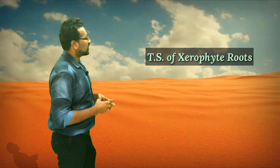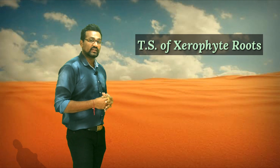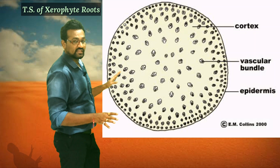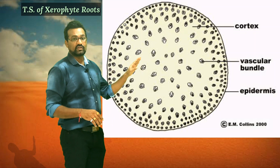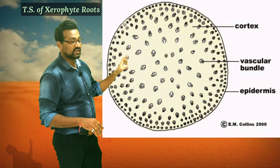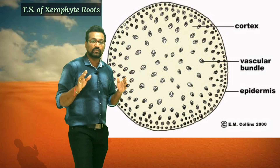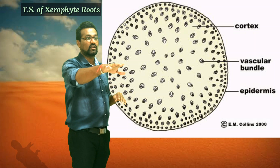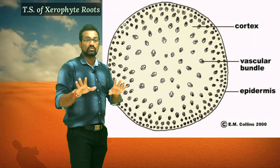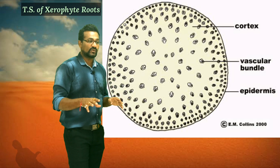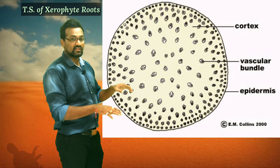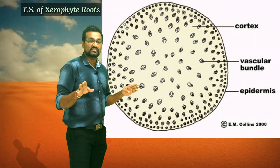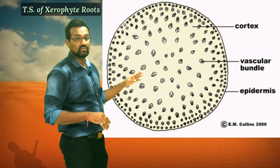Now let's discuss the internal morphology, or anatomy, of the xerophytic plant. The transverse section of the root shows a very general common diagram with no major advancement. The TS of the root shows cuticle or upper epidermis, the cortex region, and the stelar region containing well-developed xylem and phloem. Since xerophytic plant roots are present only on the surface region, the TS shows no specific modification with respect to the root.